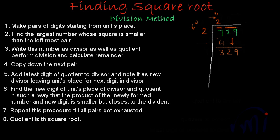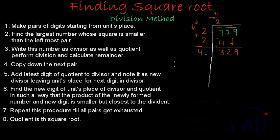The fifth step says: add the latest digit in the quotient to the divisor, and note it as the new divisor, leaving the units place for the next digit. So I add 2 (the quotient) to the divisor 2: 2 plus 2 is 4, and I leave this units place for the new digit in the divisor.